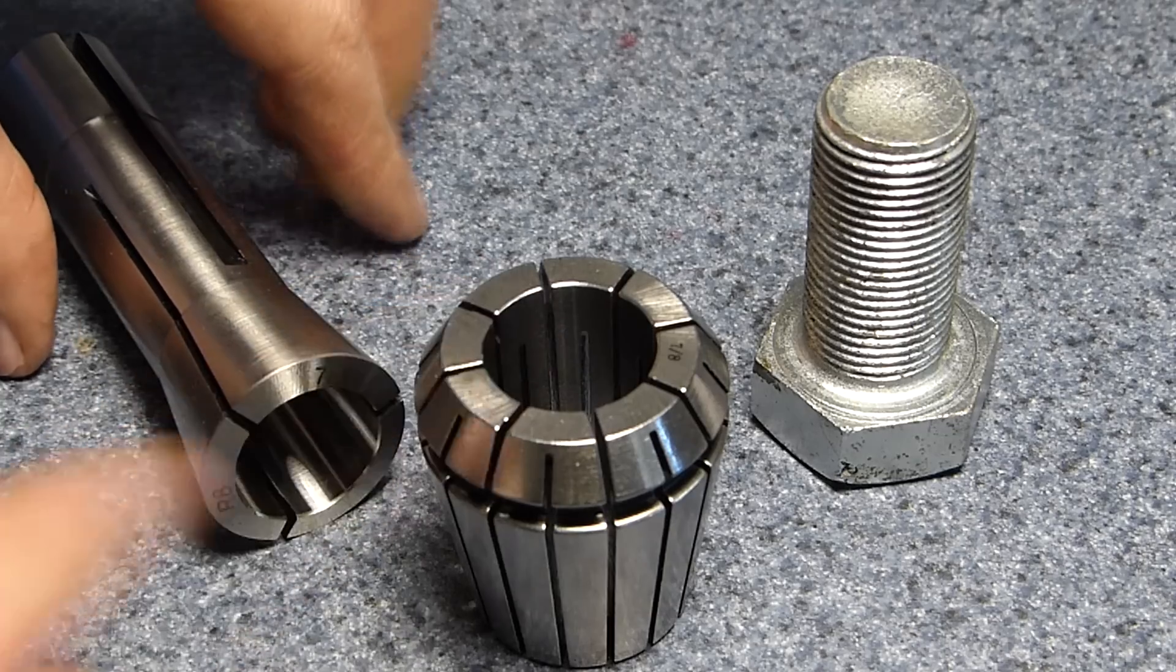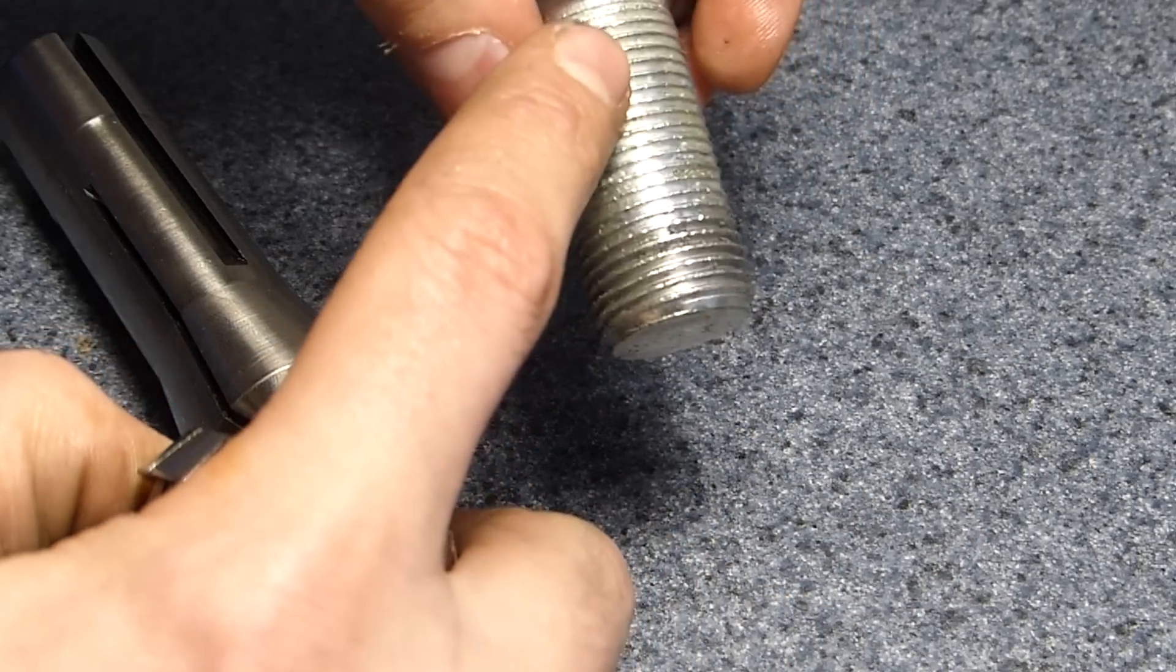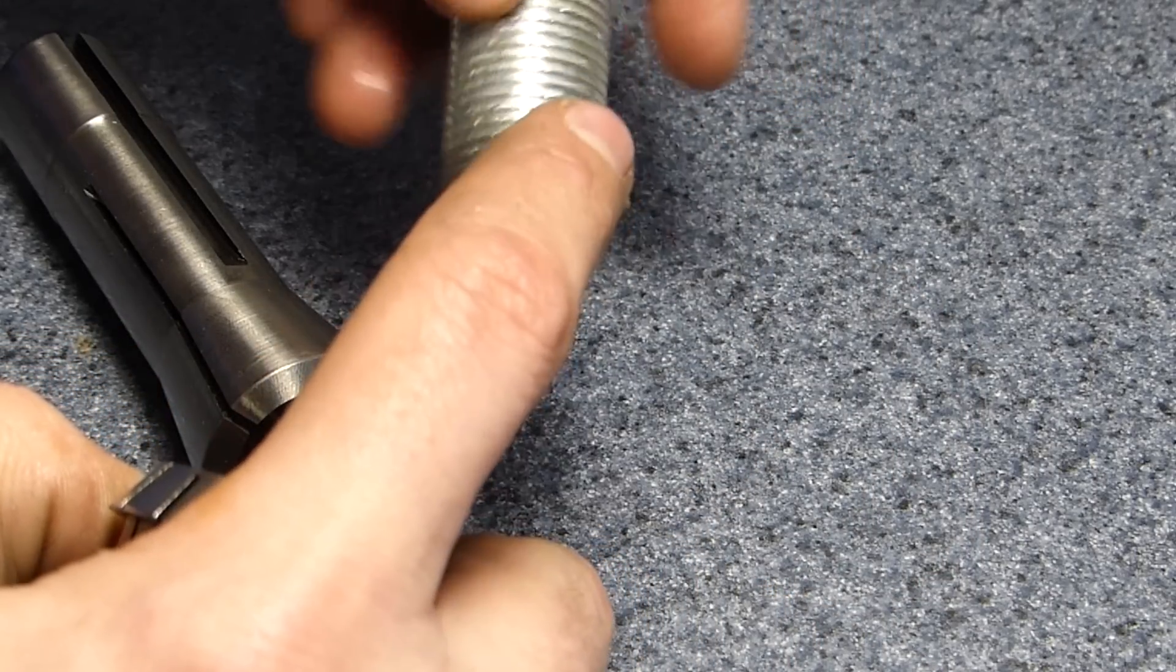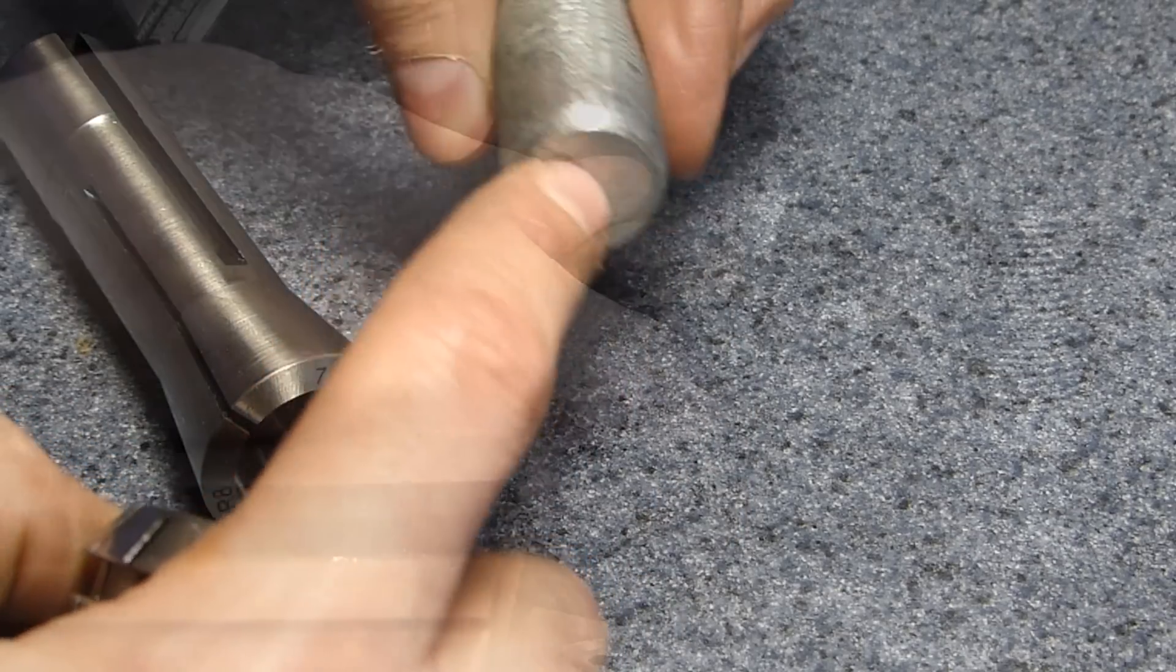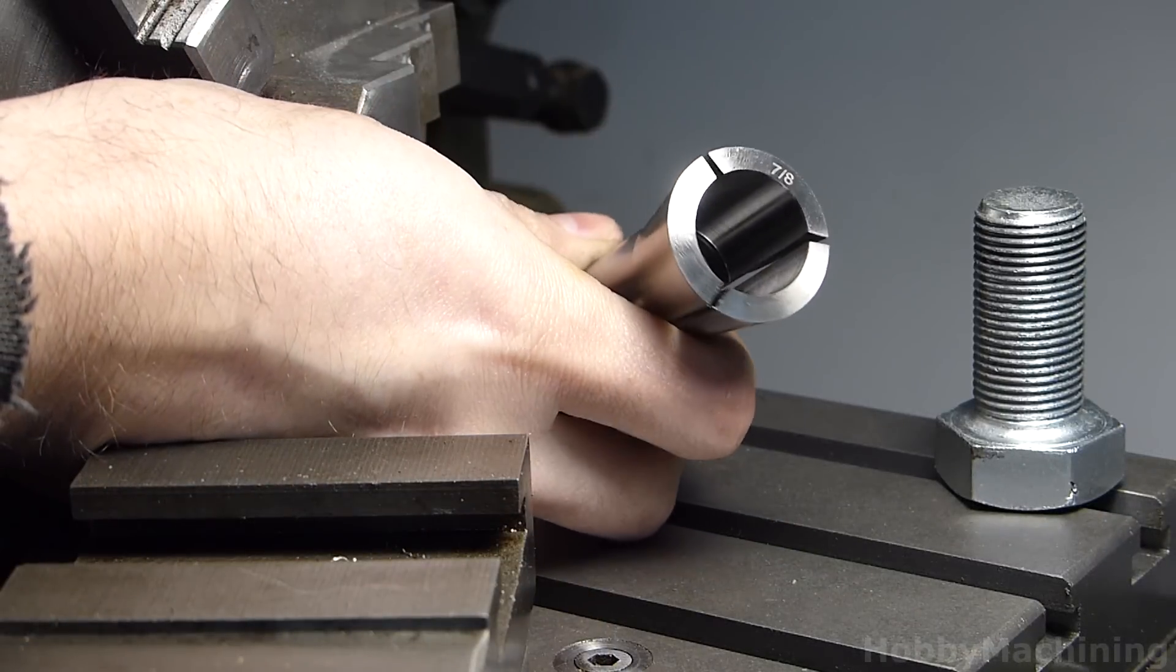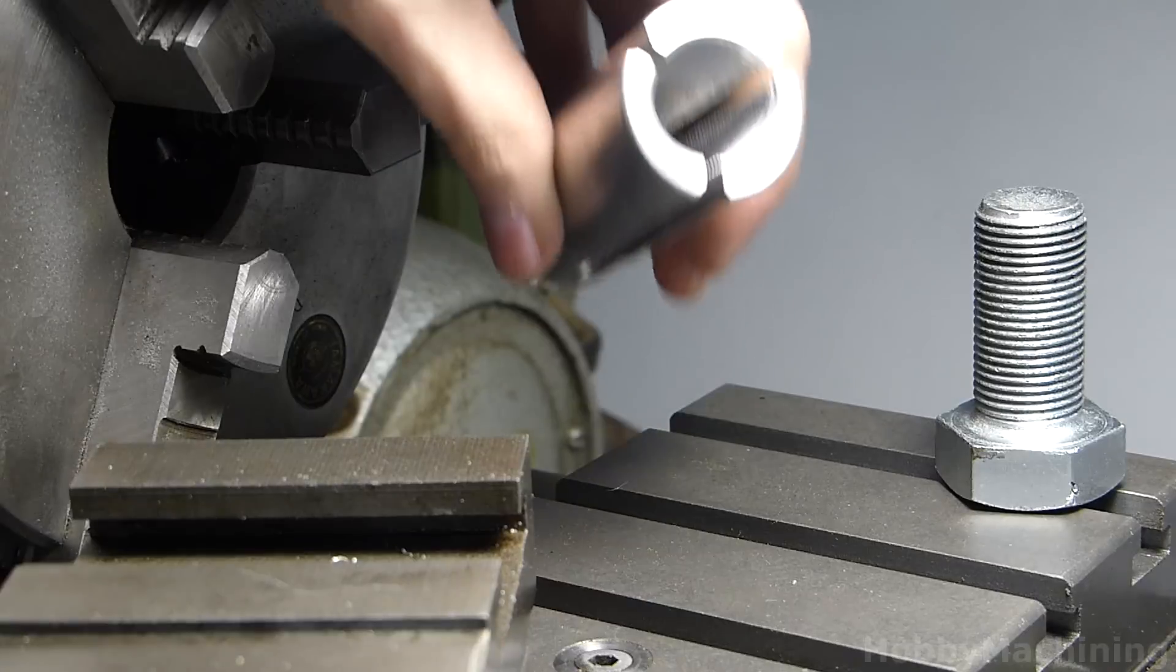What I didn't like about the collets is the fact that we're still dependent on the concentricity of the outer part of the threads here, which may or may not be accurate. Following up on the concept of the R8 collet with its three fingers brought me here.